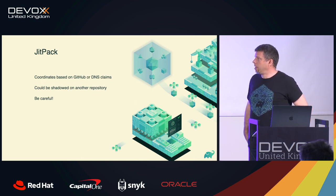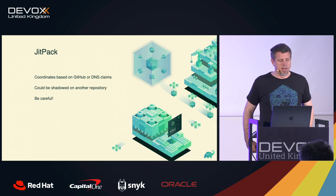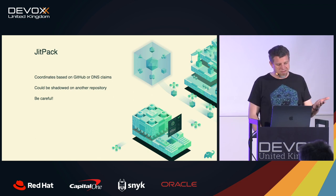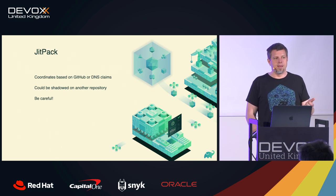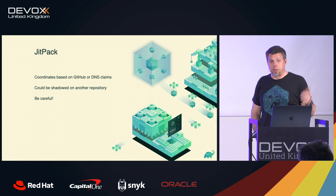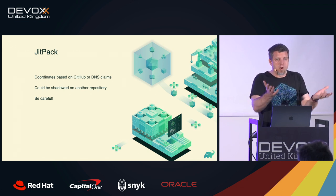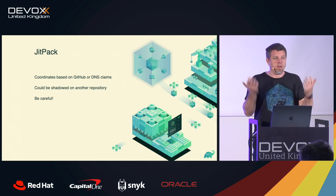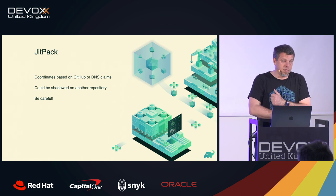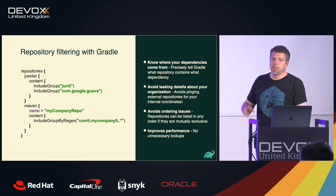JitPack is something that, when we first saw it on the Gradle team, we thought: 'yes, very convenient, but my god, this is scary.' Since then they've evolved a lot — you need DNS claims to use a custom domain name, otherwise it's tied to your GitHub or GitLab repository. But as we've seen, if you abandon a domain, someone else could grab it and publish again to Maven Central. These rules weren't in place at the time of the 2018 attack, which is why it was possible.